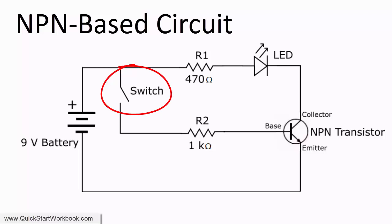When sufficient current is supplied to the base, the transistor is turned on and current is able to flow from the collector to the emitter in the transistor. This then completes the circuit and illuminates the LED.